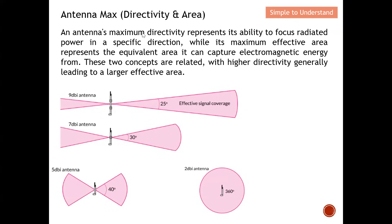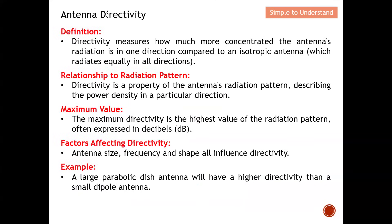Let's quickly understand the relationship between directivity and effective area of the antenna. When we talk about maximum directivity, it represents the antenna's ability to focus power in a specific direction, while maximum effective area represents the equivalent area that the antenna can use to capture electromagnetic energy. These two concepts are related — higher directivity generally leads to a larger effective area — and I will prove this relationship with an equation.